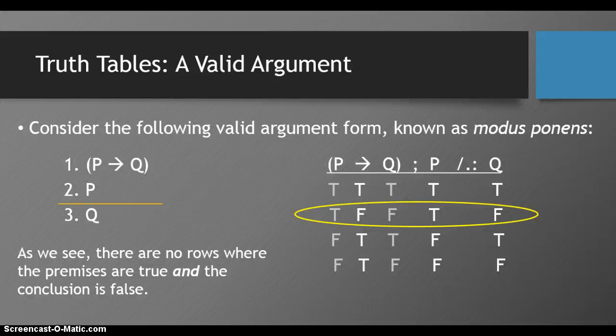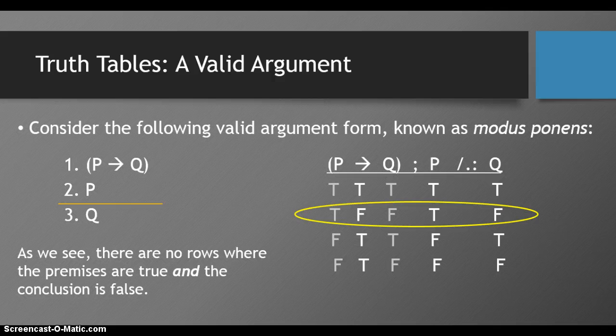In the second row, or second possible world, not all of the premises are true. So this doesn't violate our conditional, if the premises are true, then the conclusion must be, because in this case the premises aren't.